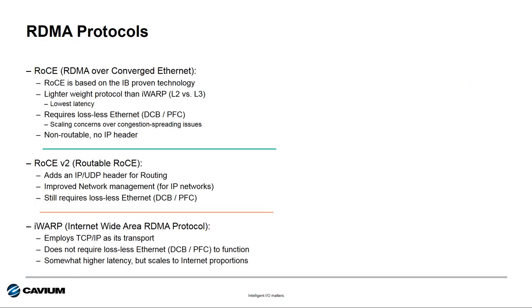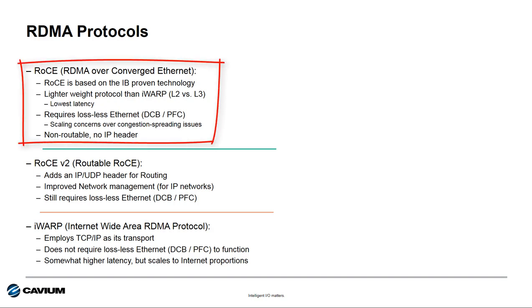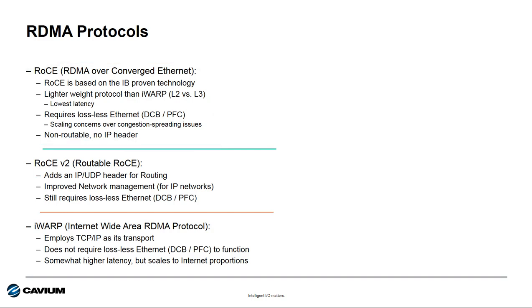There are different kinds of RDMA protocols, each with different benefits and challenges. RDMA over Converged Ethernet, or RoCE, as its name implies, requires converged or lossless Ethernet to work and provides the lowest latency of all the RDMA protocols. However, because RoCE requires lossless Ethernet, it can be susceptible to congestion issues relating to pause frames, making scalability beyond one or two hops a challenge.